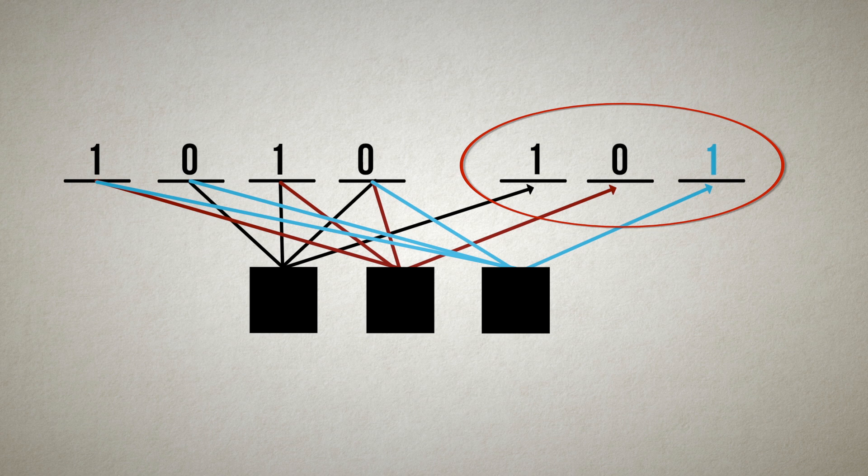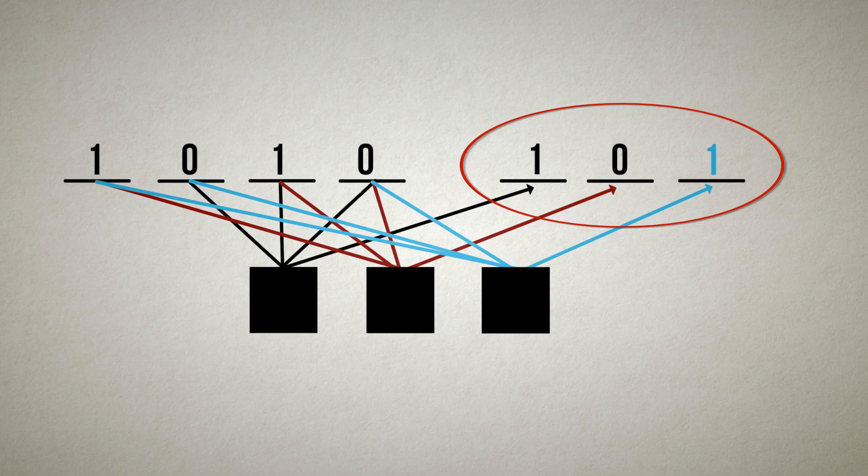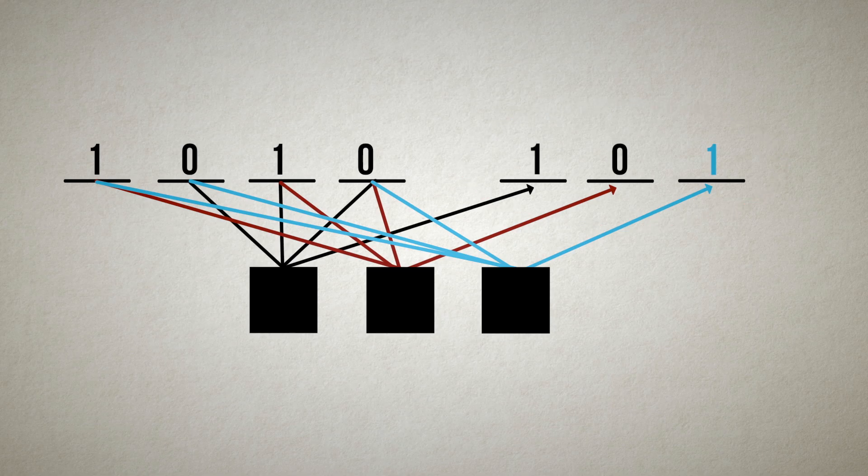The problem is this doesn't provide the same protection to the parity bits, which can also be lost during transmission. Notice that each parity check bit is itself only connected to one parity check set. Since any bit that is connected to only one parity check set is vulnerable, this leaves all parity check bits vulnerable.